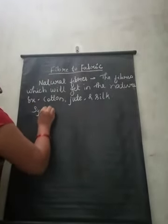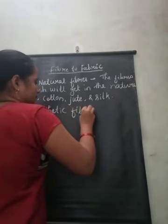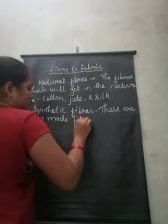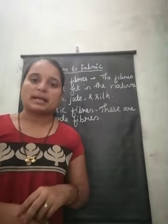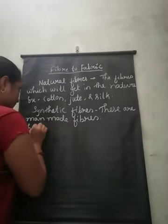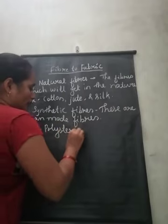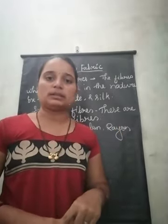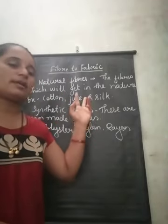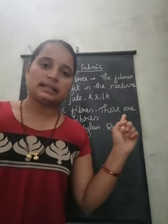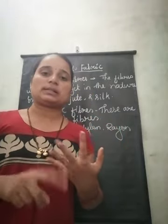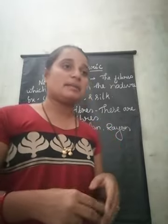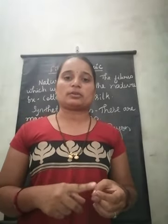Next are synthetic fibers. Synthetic fibers are man-made fibers. For example, polyester, nylon, and rayon are called synthetic fibers. So fibers are of two types: natural fibers, which we get in nature — like jute, cotton, and silk — and synthetic fibers, which are man-made — like polyester, rayon, nylon, and so on.